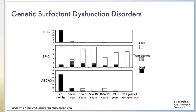Deletions or mutations in the NKX2.1 gene can result in a phenotype of RDS or severe interstitial lung disease, as well as abnormalities of the CNS — specifically chorea — and the thyroid gland, specifically hypothyroidism. This gene is important for expression of surfactant-related genes, including ABCA3 and the four surfactant proteins.